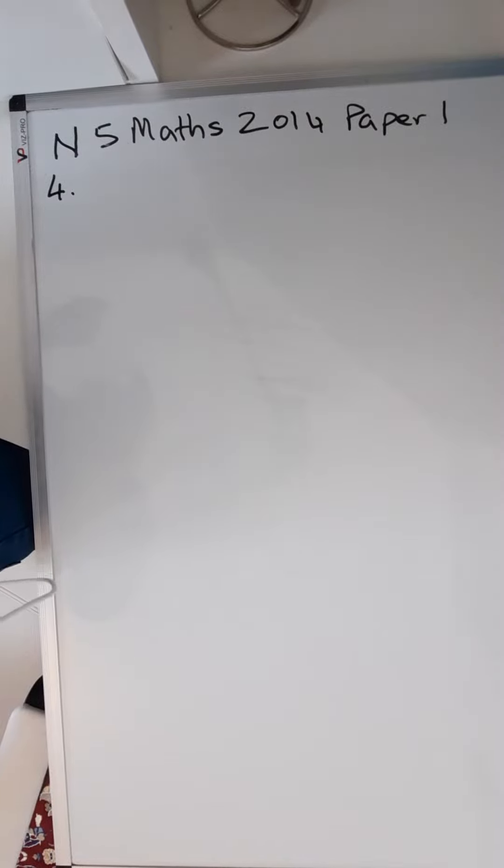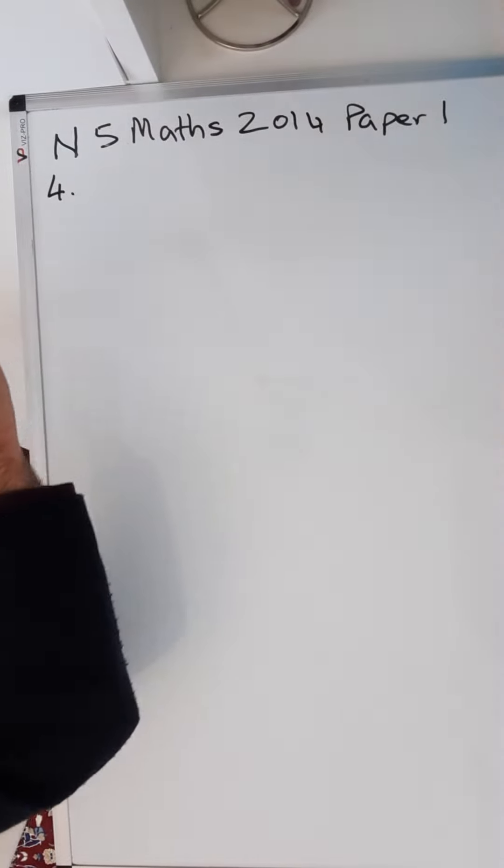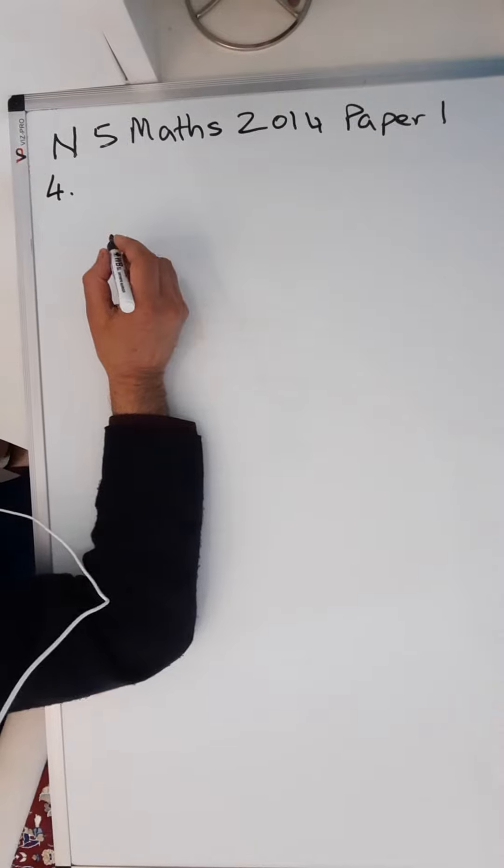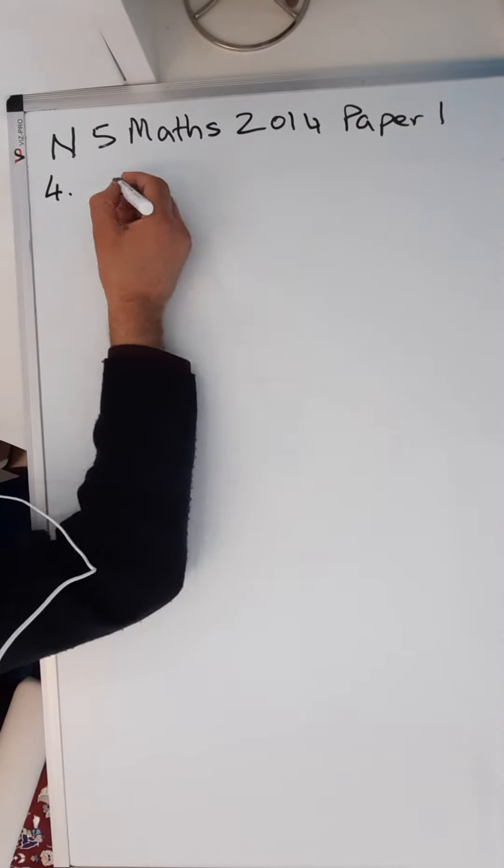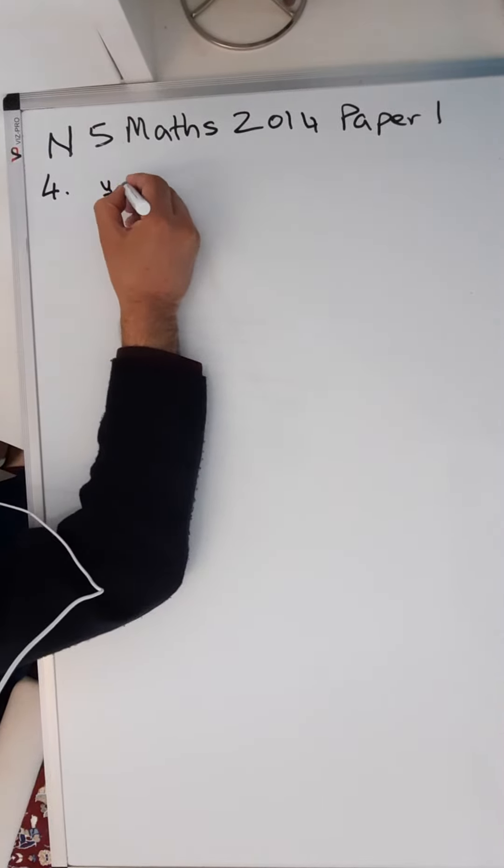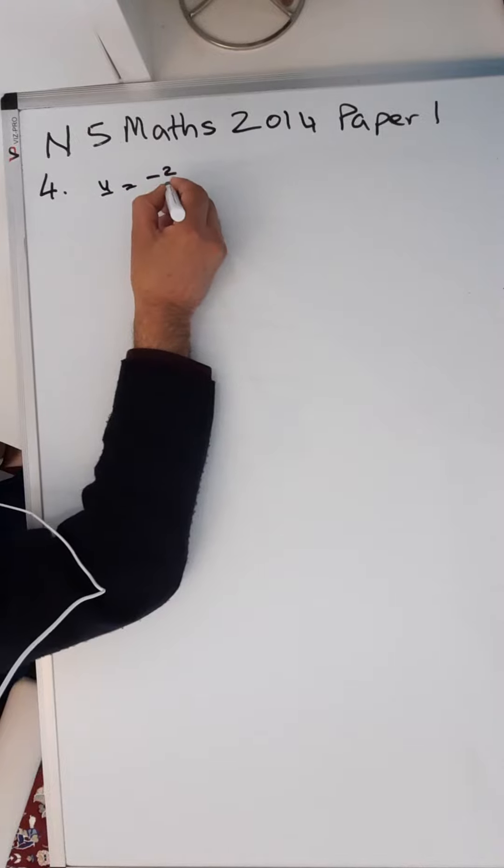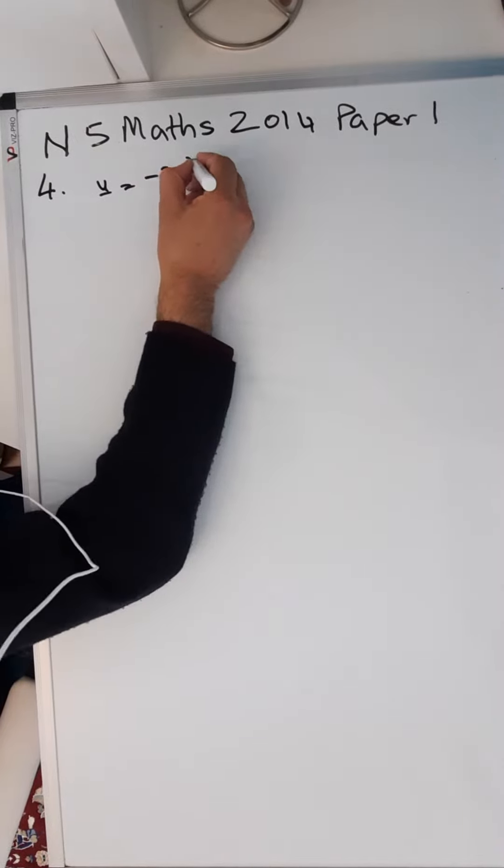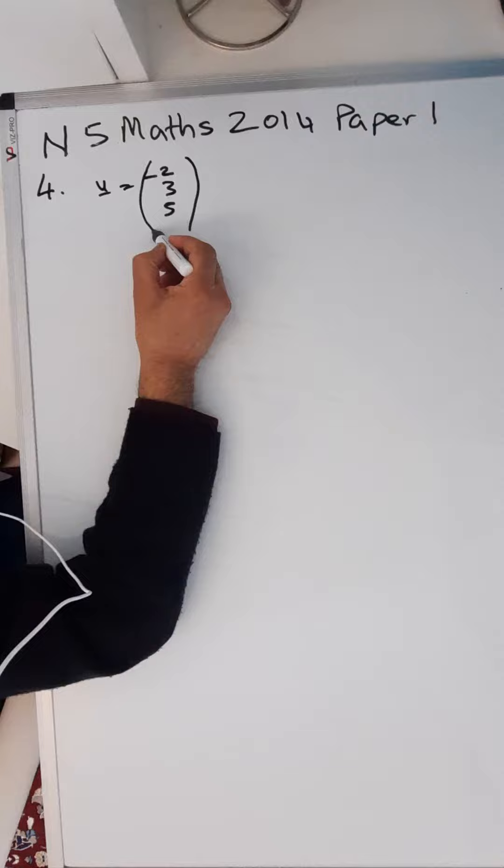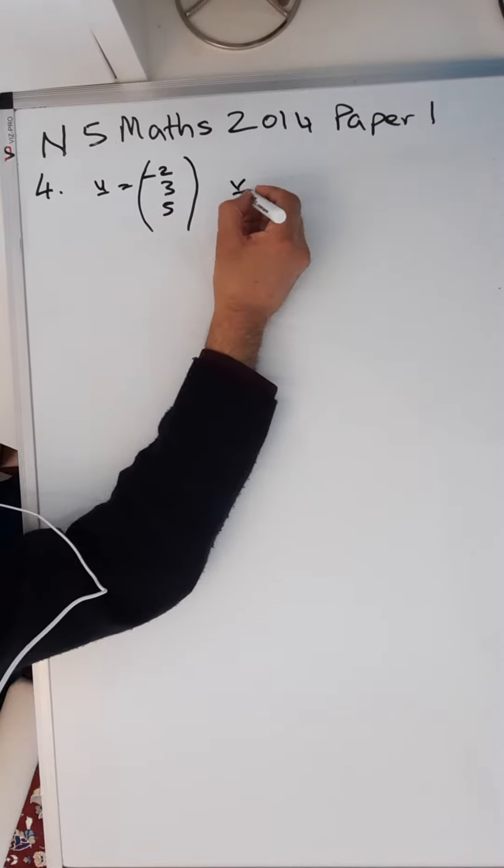National 5 Mathematics 2014 Paper 1, question number 4. This is a vector question. You're given two vectors. u is equal to minus two, three, five. They're written in component form when you write these vertically, that's component form.